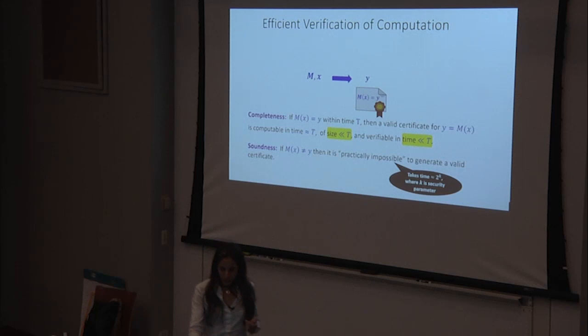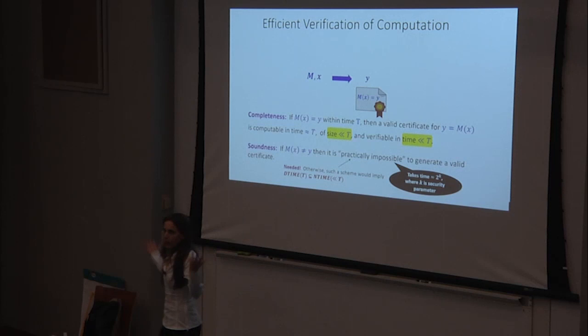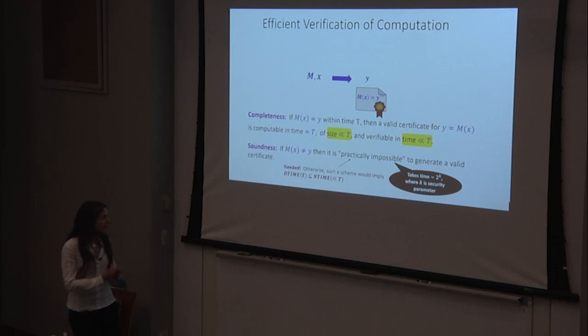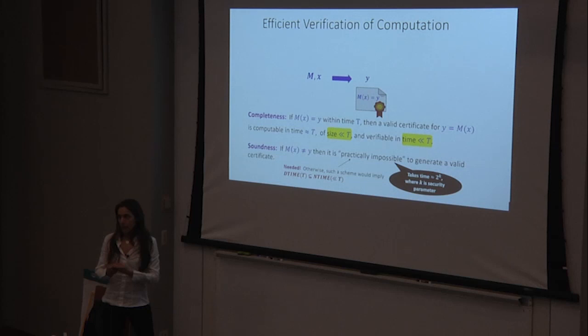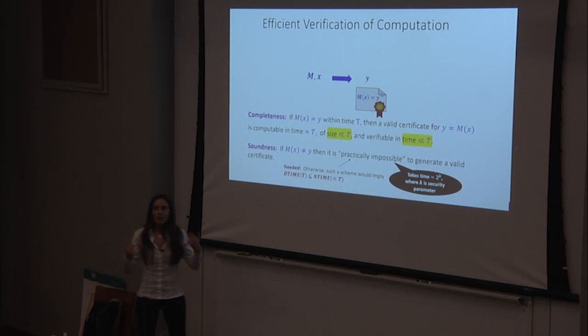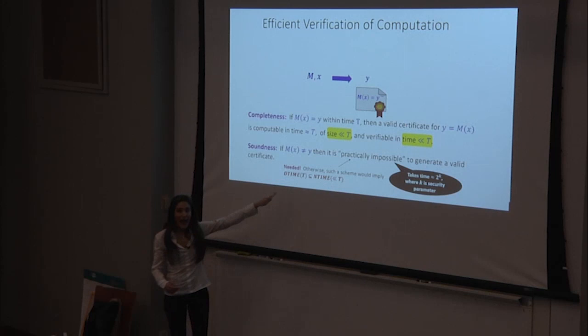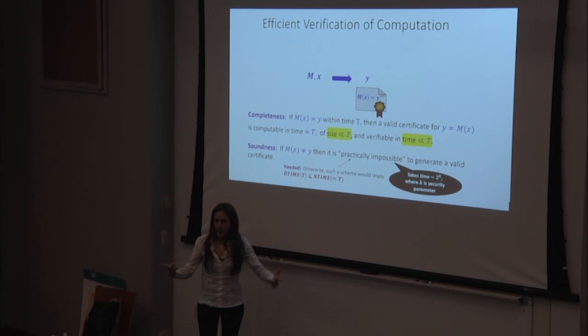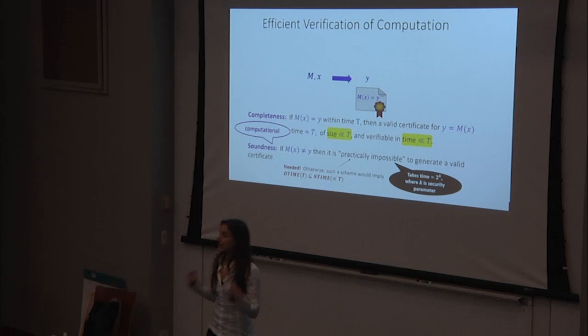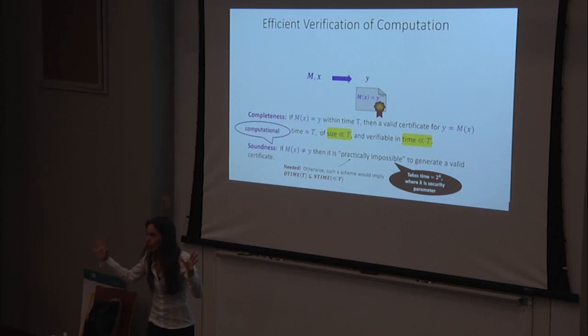You might ask why we settle for practically impossible rather than truly impossible. We believe it is a necessary condition. Without it, if certificates for incorrect computations simply did not exist, it would imply that any time-T computation has a short witness, which we believe is false. This is known as computational soundness, as opposed to statistical soundness where you cannot cheat regardless of computational power.